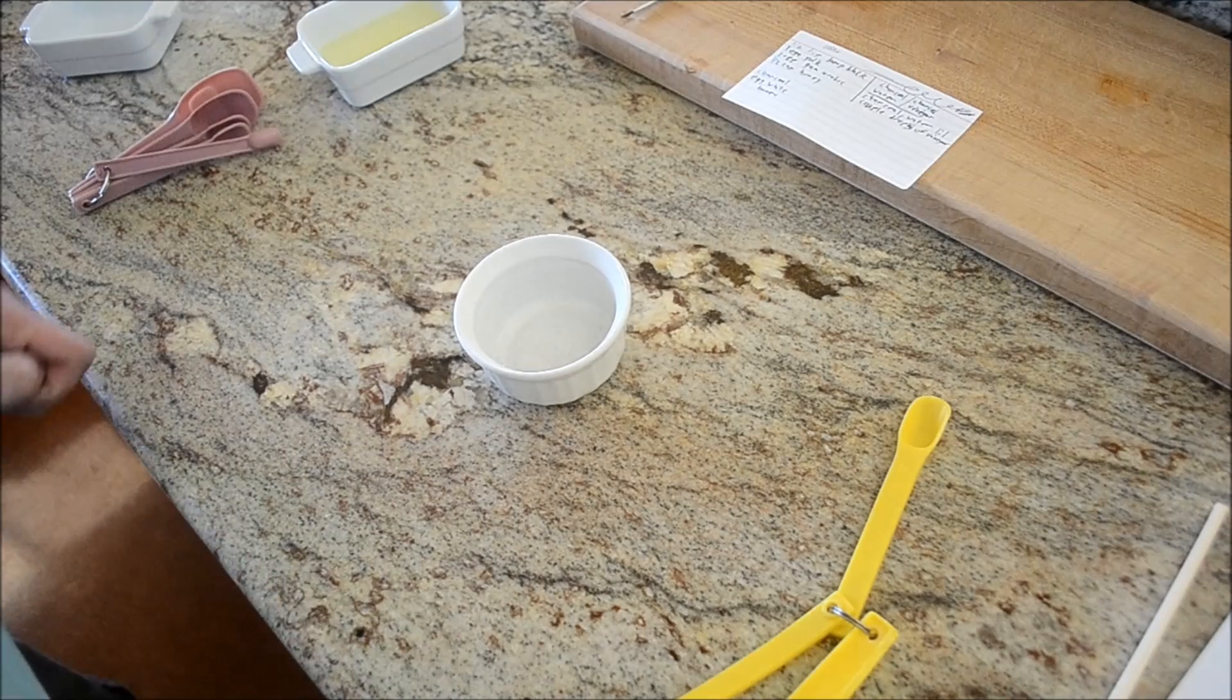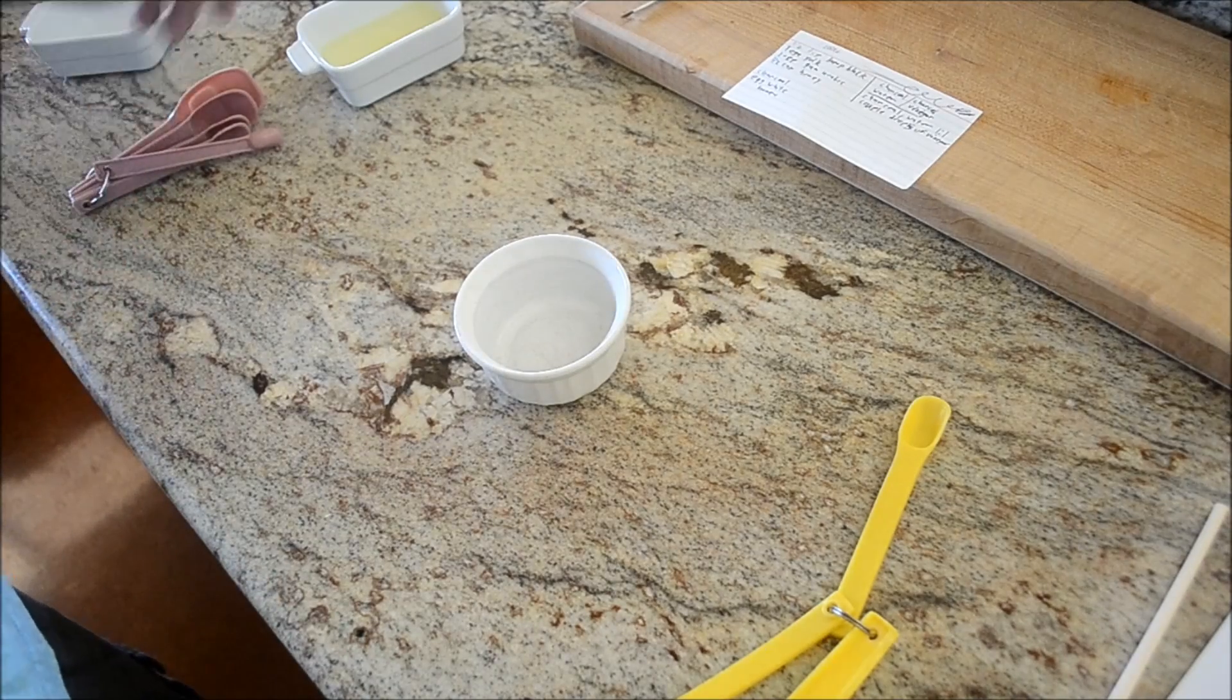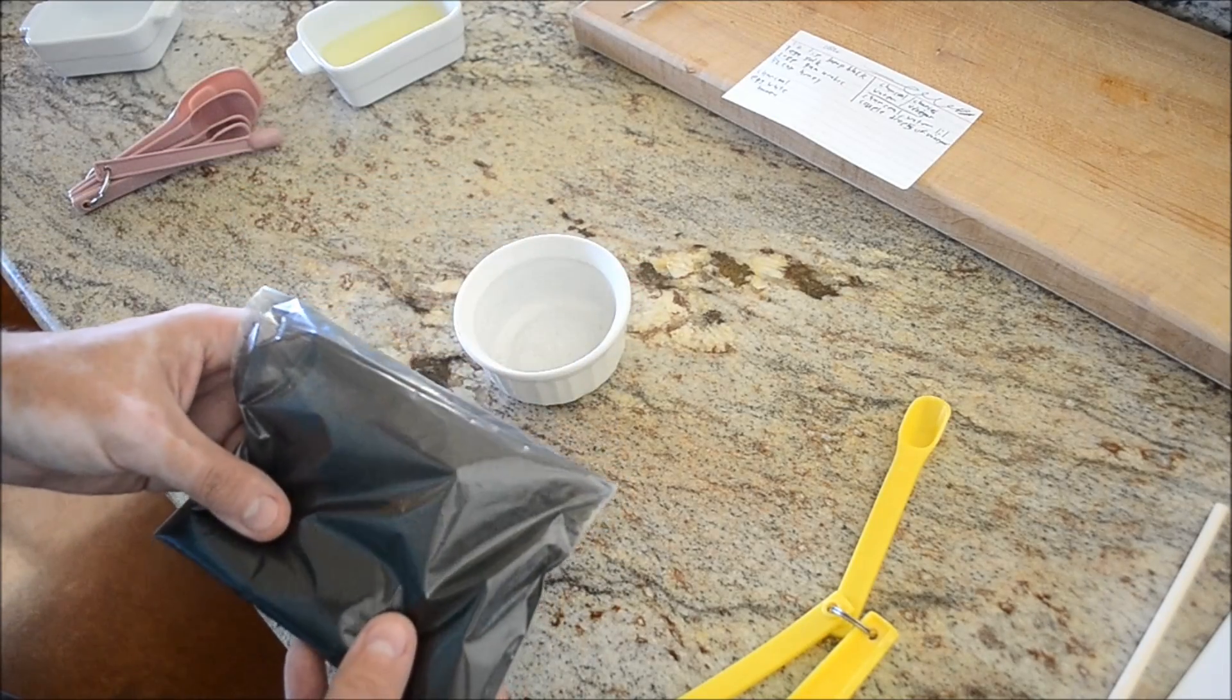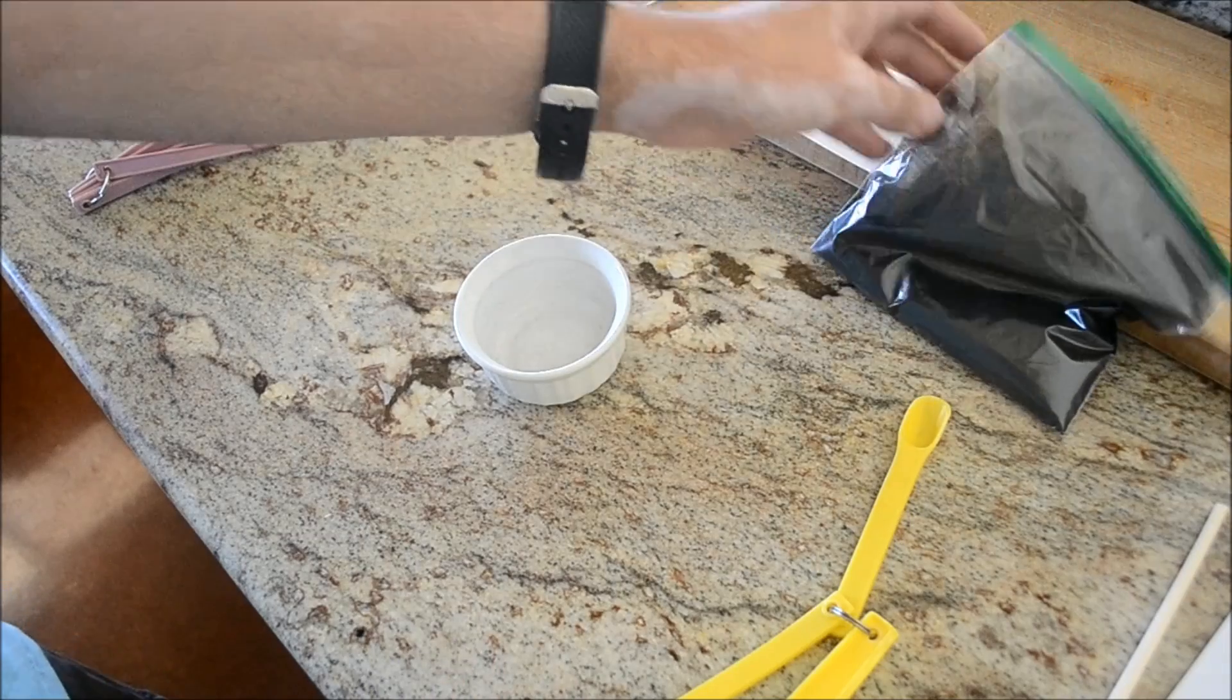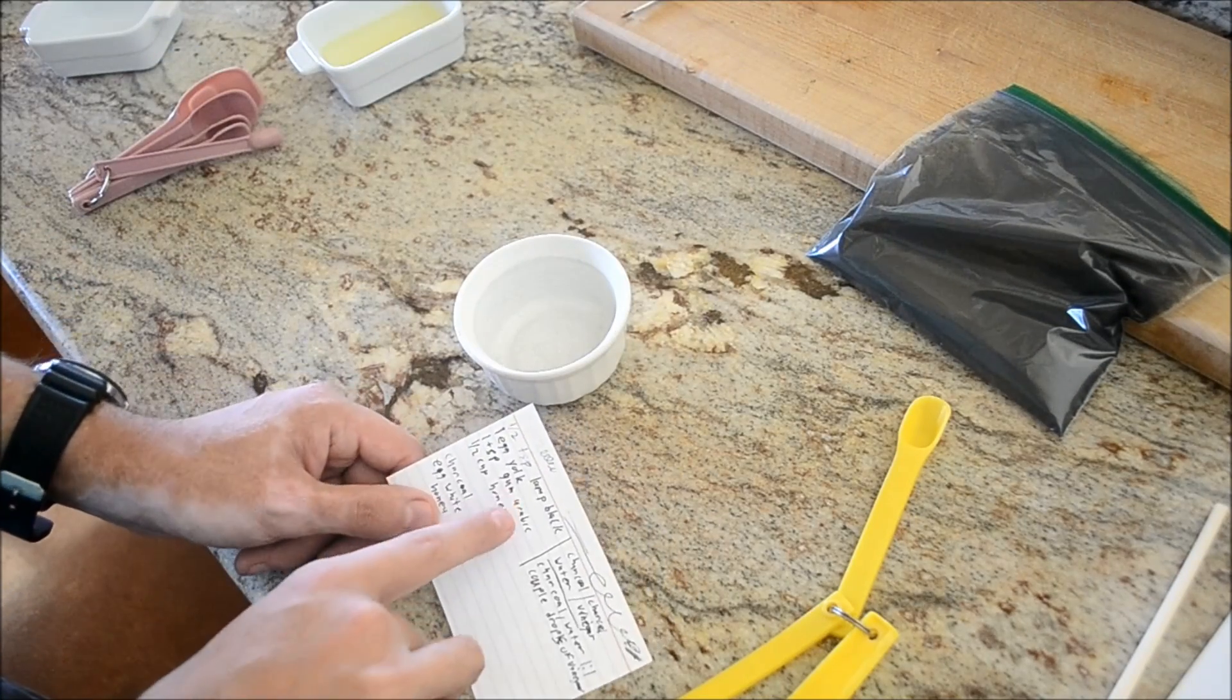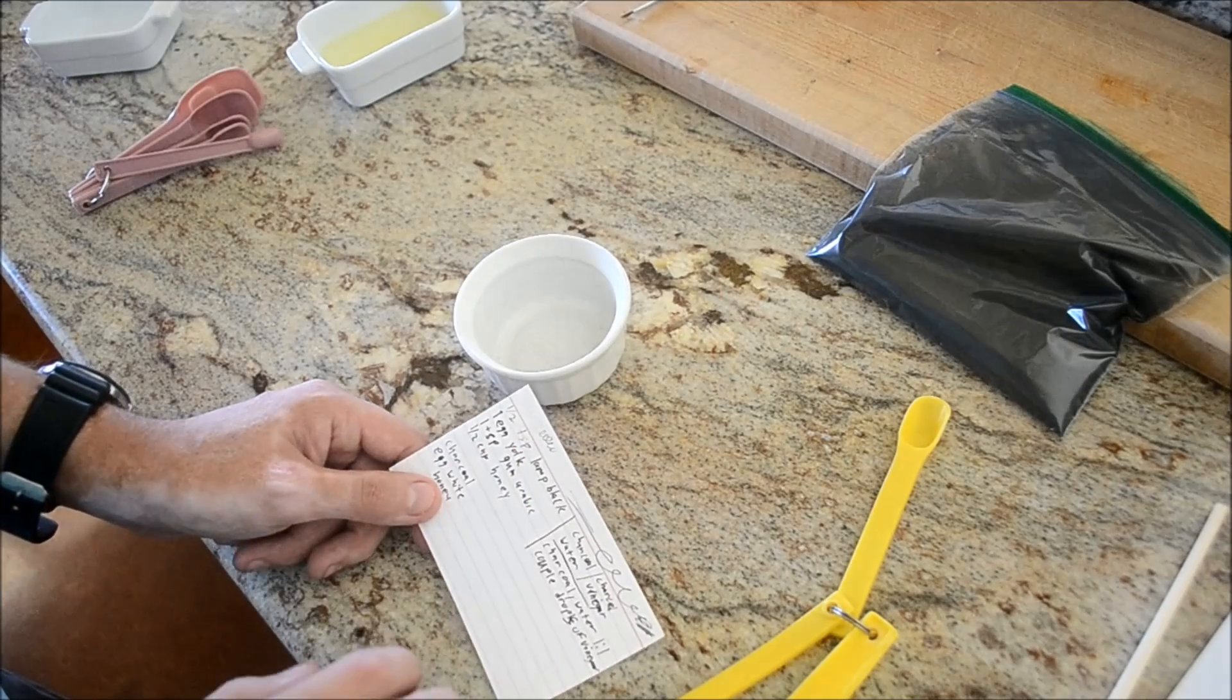So today I'm going to try and make some black ink using charcoal that I ground up from the charcoal that I made. I have a couple different recipes here. One of them uses gum arabic which I don't have so I'm just going to omit that for today.